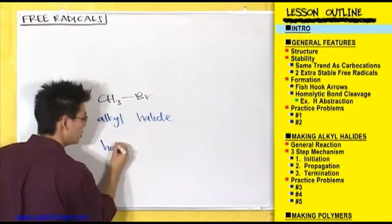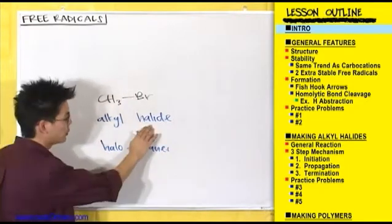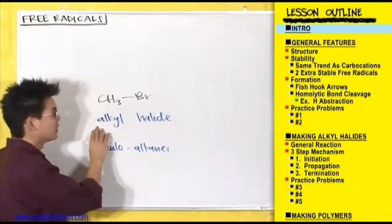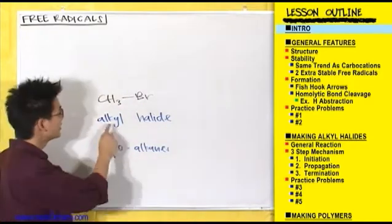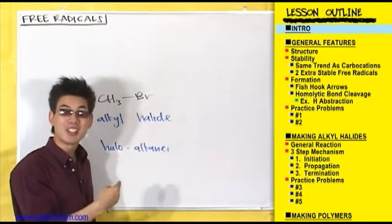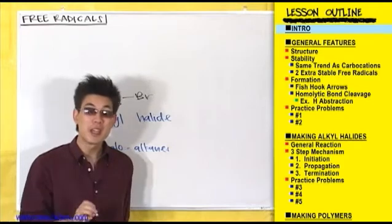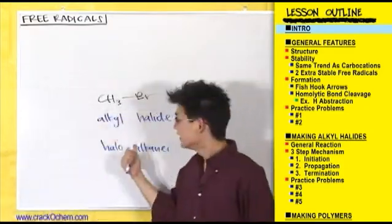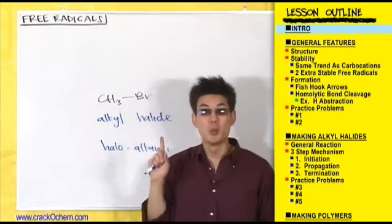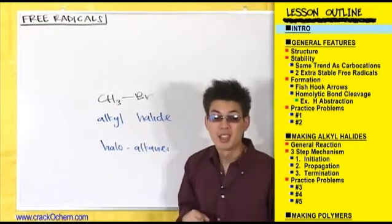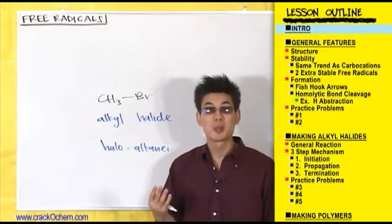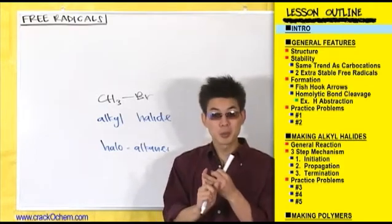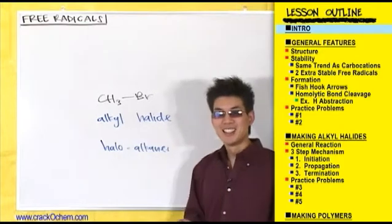Alkyl halides are also known as haloalkanes — basically just flipping the terms. Halo means halogen, and alkane refers to the alkyl group, so it means you have a halogen on an alkyl group. If you ever see a carbon group with a halogen stuck on it, that's an alkyl halide, also known as a haloalkane. These are very important in organic chemistry — many different types of reactions use alkyl halides, so it's important to know how we make them. Free radicals give us one way to make these compounds. Another reason to study free radicals is because they're involved in polymer chemistry, but we'll cover that later in the polymers chapter.